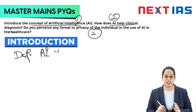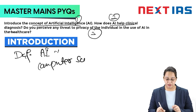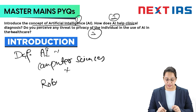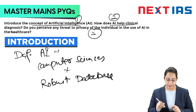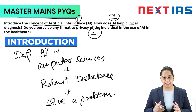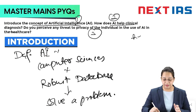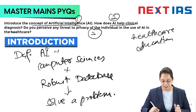In the introduction part, we start with the definition of Artificial Intelligence. Artificial Intelligence is an area where computer science is used and analysis of a robust database is made to solve a problem. It basically replicates human action. In addition, you can write the application part — AI is used in healthcare, education, and agriculture.